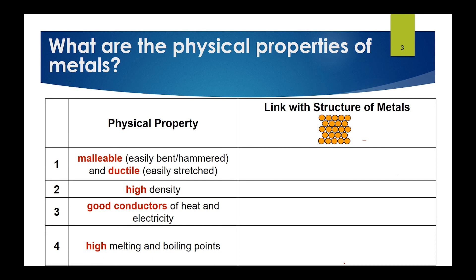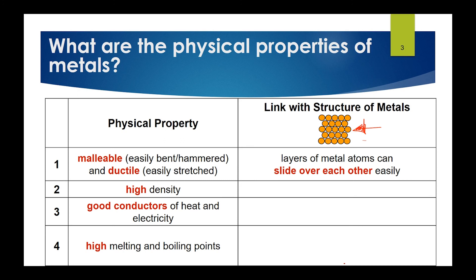How do we link these properties to the structure of metals? Metals are malleable and ductile because the layers of metal atoms, which are all the same size, can slide over each other easily when a force is applied. For example, striking a metal with a hammer shifts one row of atoms against another, allowing the metal to be shaped. High density results from metal atoms being very closely packed, giving a large number of atoms per unit volume.